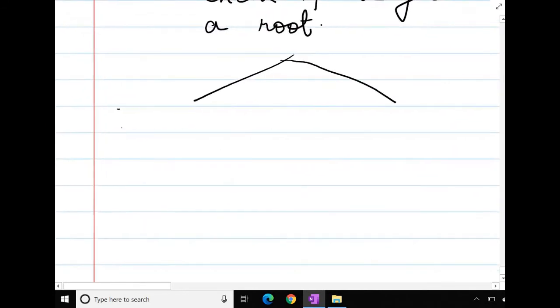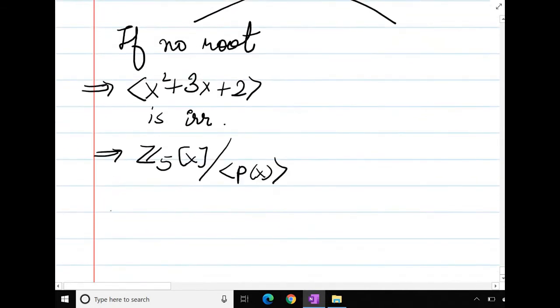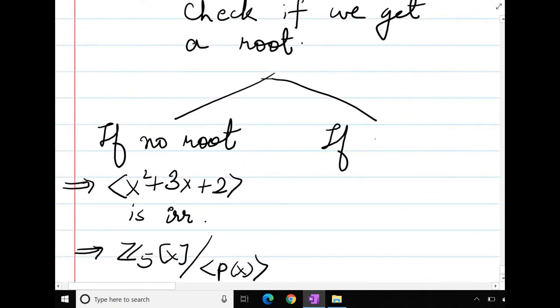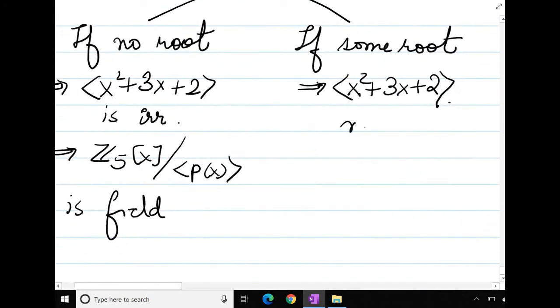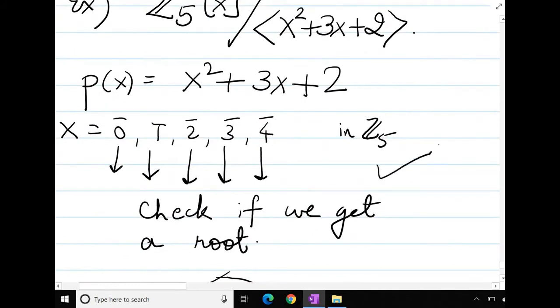So we have that if no root, then I will say that this polynomial is irreducible, and therefore Z_5[x] over that will become a field. If some root, this means that this ideal need not be a maximal ideal. Then I can say that this is certainly not a field. This implies that it need not be a field. Leave it to you to check whether this is irreducible or not.